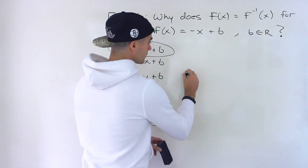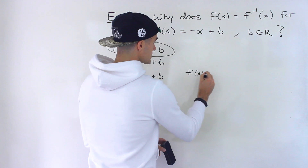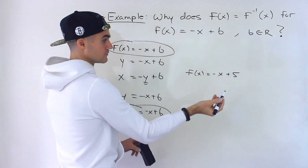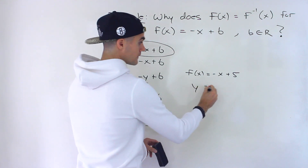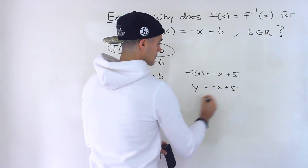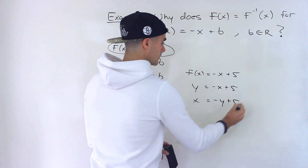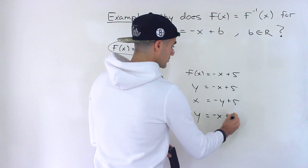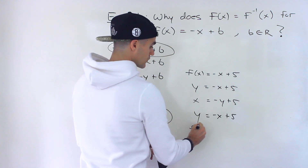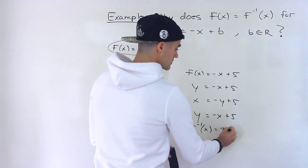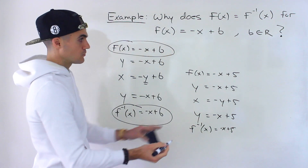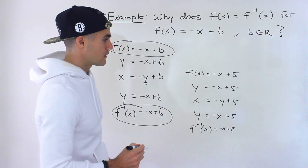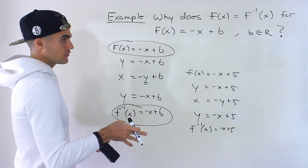So it can be anything. Let's say f of x is negative x plus five. If we run the same process and interchange, notice that y equals negative x plus five. So the inverse ends up being negative x plus five. No matter what b value you use, as long as it's a real number, the function is going to equal the inverse.